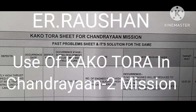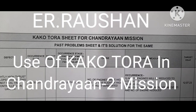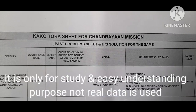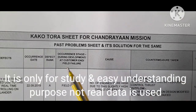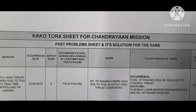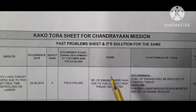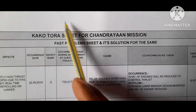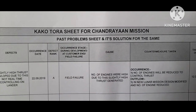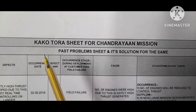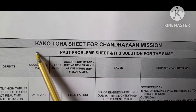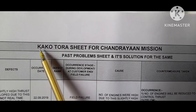Hi friends, today we are talking about a Japanese word: Kako Tora. What is the meaning of Kako Tora? We are also trying to understand it with the best example, which is set in mind — the Chandrayaan missions. So all about Kako Tora and its example we discuss here. Kako is a Japanese word; Kako means past.